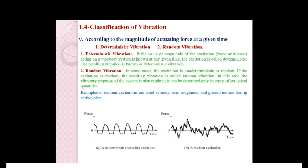The last category to classify vibration is according to the magnitude of actuating force at a given time. Deterministic and random vibrations are the two types. Deterministic vibration is defined as: if the value or magnitude of the excitation acting on a vibratory system is known at any given time, the excitation is called deterministic, and the resulting vibration is known as deterministic vibration.